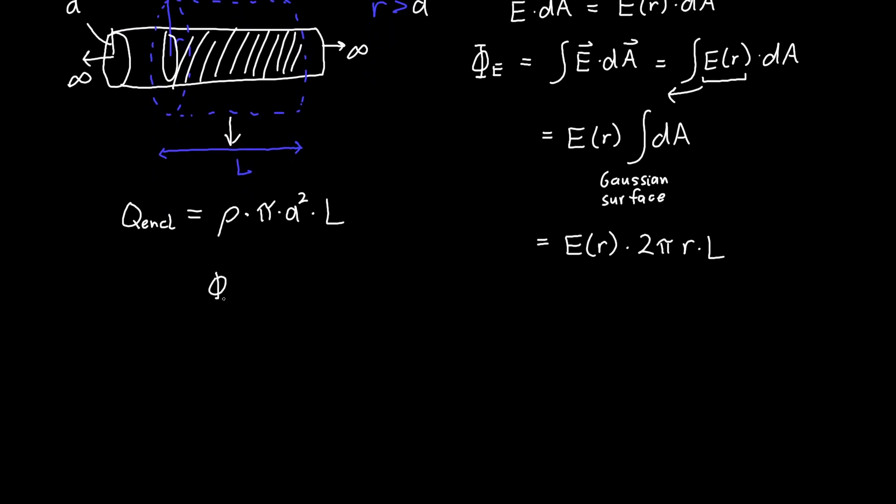So applying our favorite trick, the electric flux is equal to the charge enclosed over epsilon naught—Gauss's law—we see that E as some unknown function of the distance from the center times 2π little r L is equal to rho times π a² L all over epsilon naught. And so as before, one of the π's cancel, the L thank goodness cancels, and if we divide both sides by 2r we got a 1 over 2r over here.